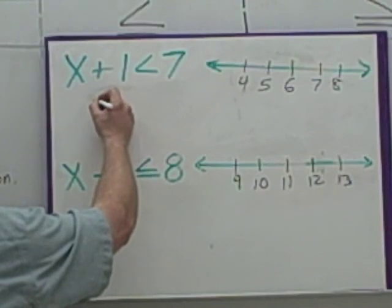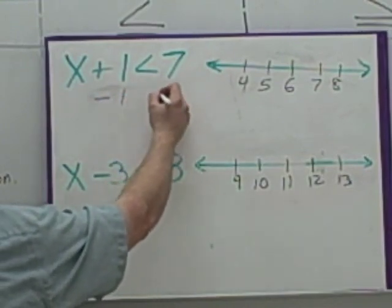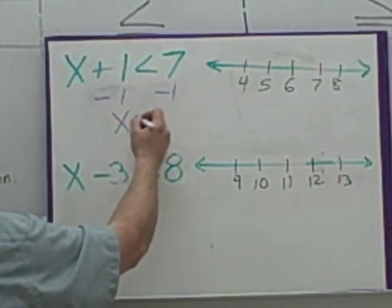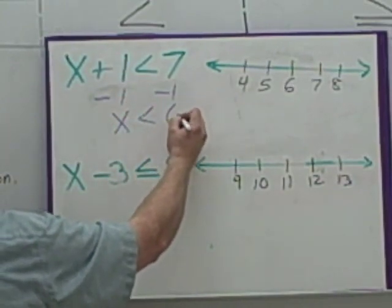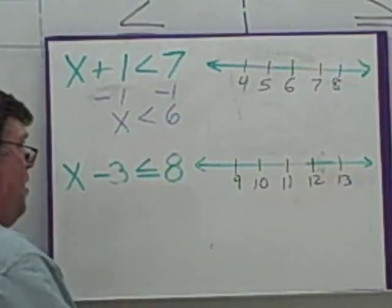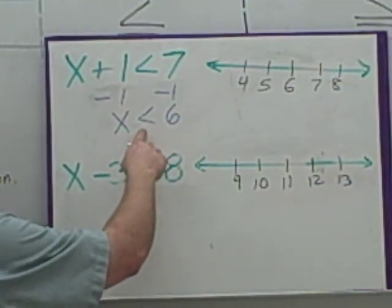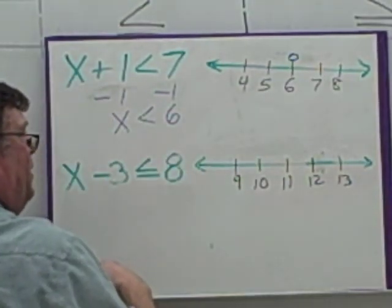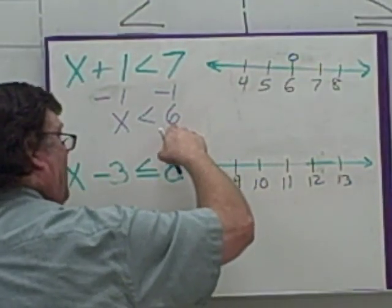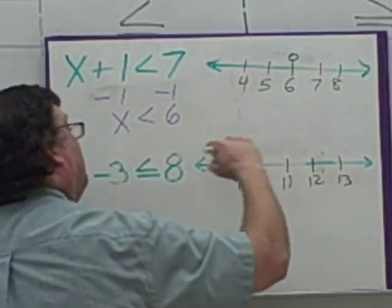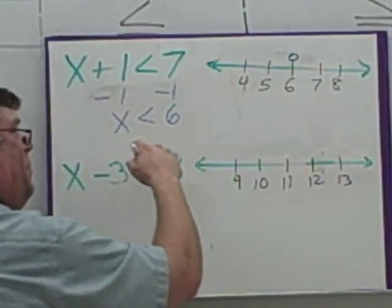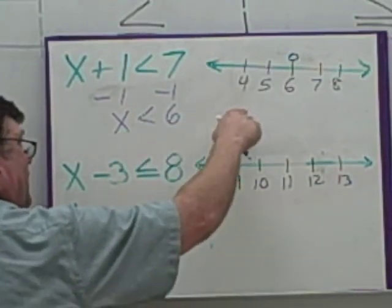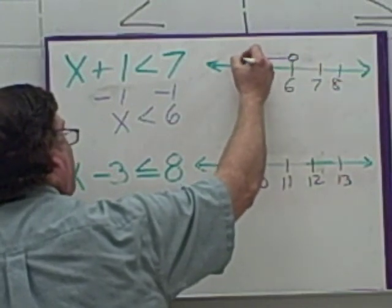We have x plus one is less than seven. We're going to subtract one from both sides. These will cancel. You get x is less than seven minus one, which gives you six. It's a less than symbol, which means we're going to have an open circle because there's no or equal to. It's going to be right over the six. Less than six means we want the values less than six — five, four — so we go in this direction.